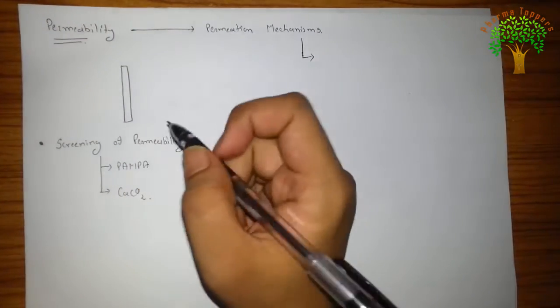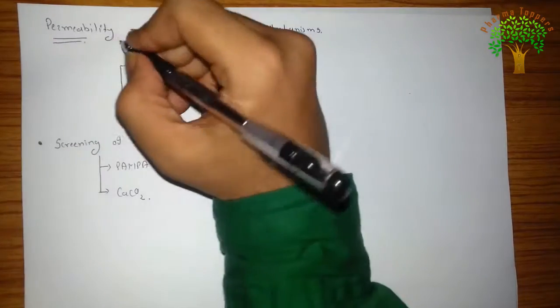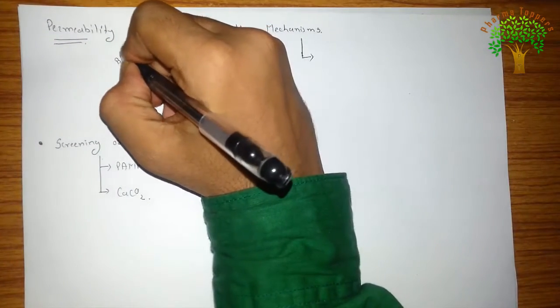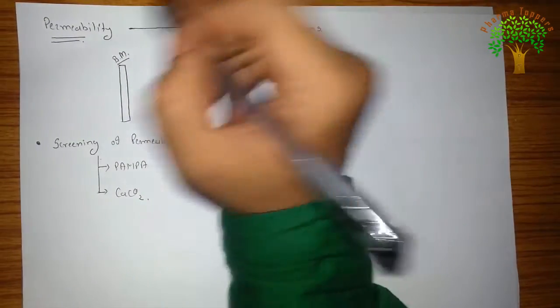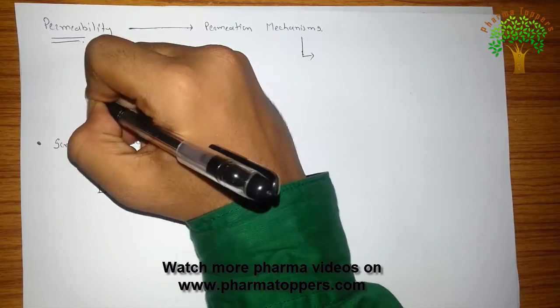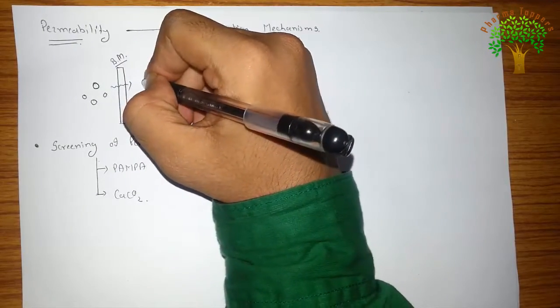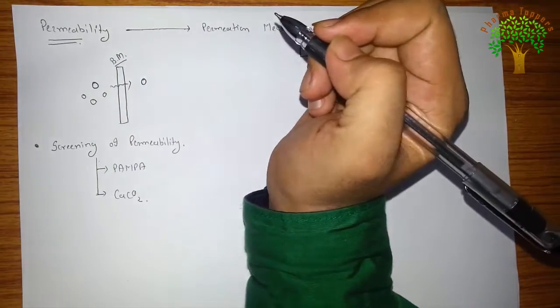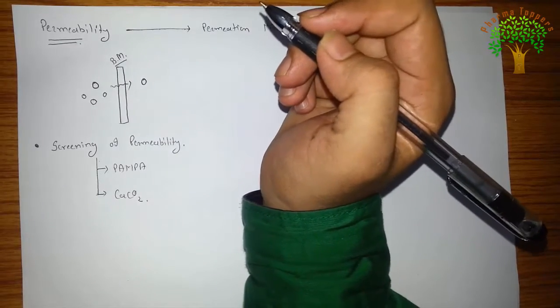So starting with permeability, suppose this line is the biological membrane, biomechanical membrane. It can be either any intestinal membrane or BBB or anything else. Suppose these are the molecules on this side. So the ability of this molecule to pass this membrane and appear in the systemic circulation or pass any biological membrane to go from one side to another side, it is based on its permeability.